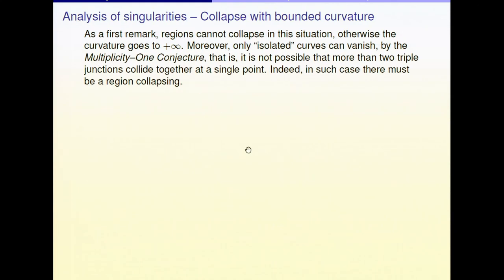The first situation: collapse with bounded curvature. As I told you yesterday, this can happen only when a single isolated curve collapses down. Because actually, if you have a collapse with bounded curvature, you cannot have a collapse of a region. A region can collapse only if it has fewer than six edges — at most five edges.